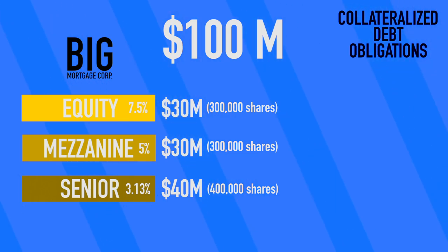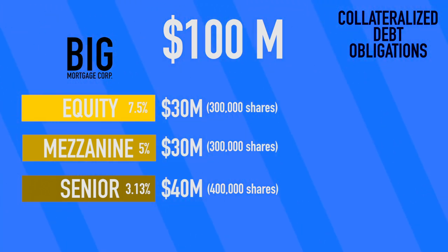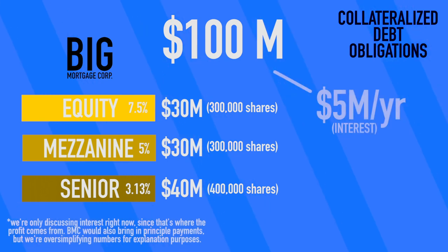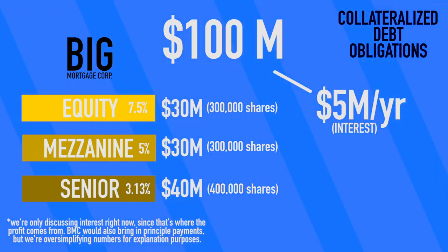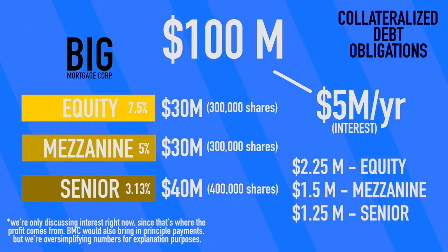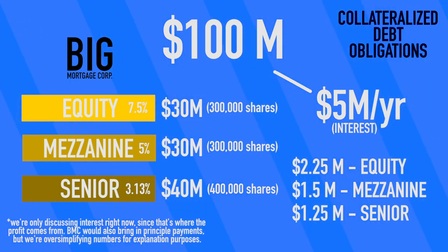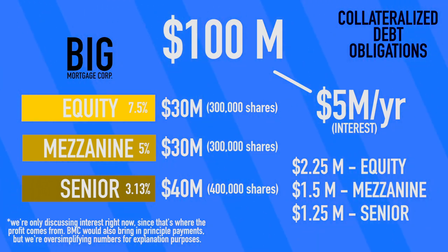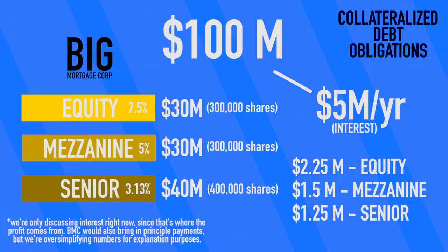The loans as a whole — meaning all the money that Big Mortgage Corp will bring in each year — is $5 million, assuming that no one defaults. If it goes perfectly, the senior tranche gets $1.25 million to split, their full $3.13 per share. The mezzanine gets $1.5 million to split, and equity gets $2.25 million to split, each tranche getting what they expected to make that year.